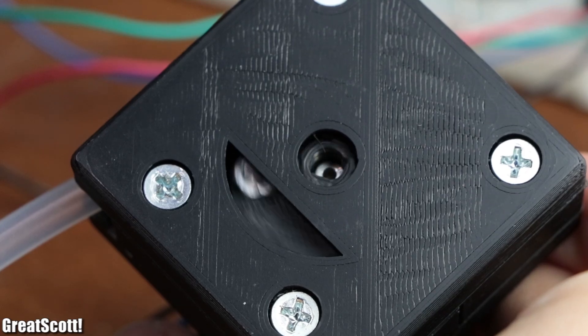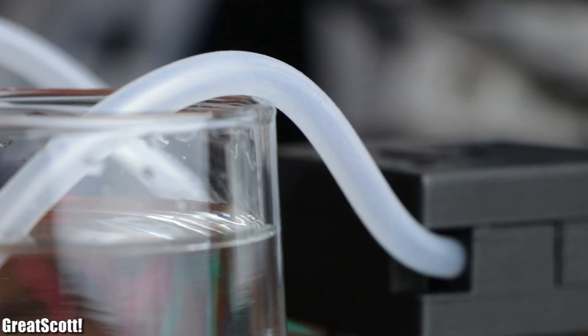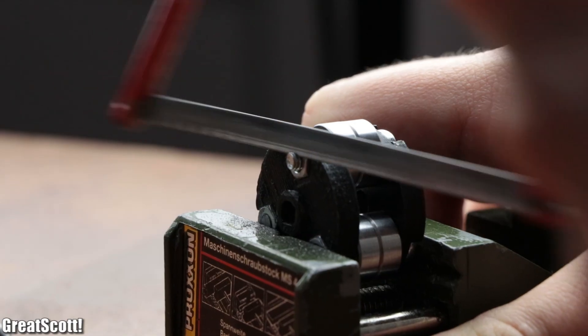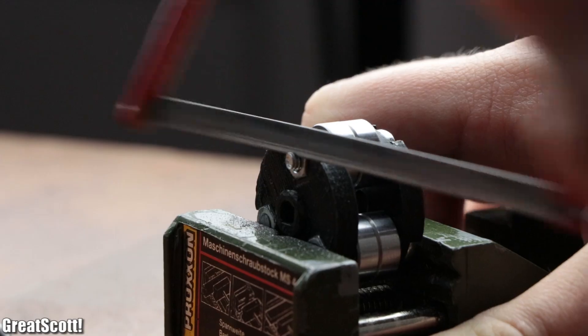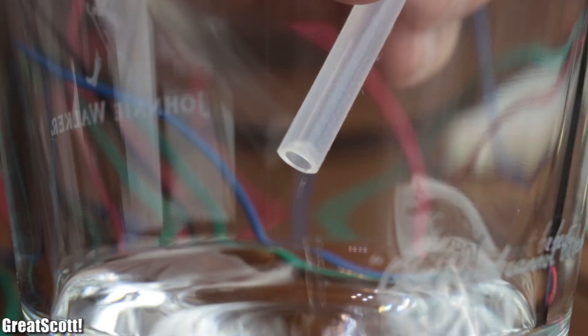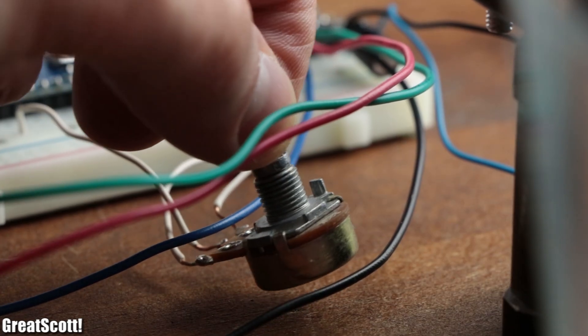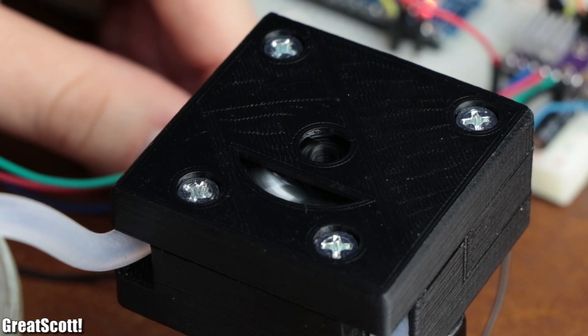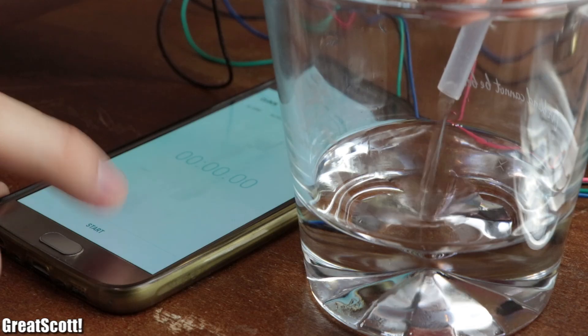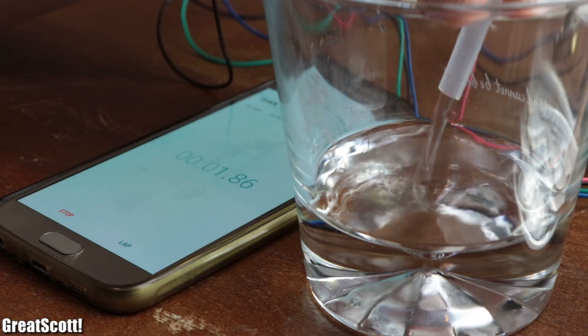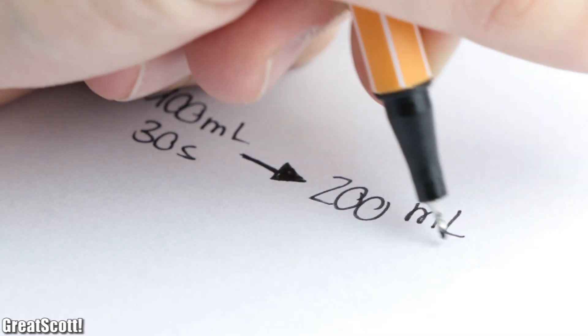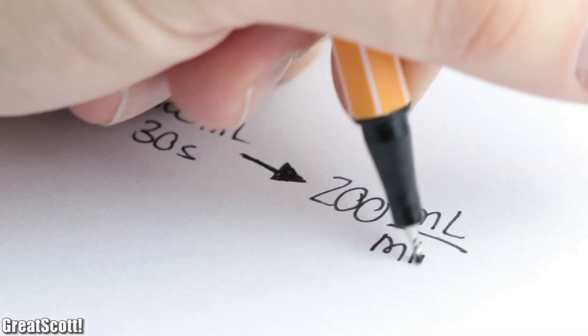As you can see the rotor moves without a problem and the pump can also transport liquid. But I should mention that I had to shorten the bolts of the rotor in order to achieve that. And by turning up the RPM of the motor to its maximum right before it gets stuck and measuring the amount of pumped milliliters per minute, we get a flow rate of approximately 200 milliliters per minute.